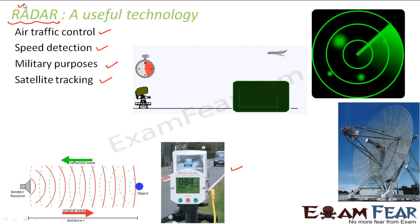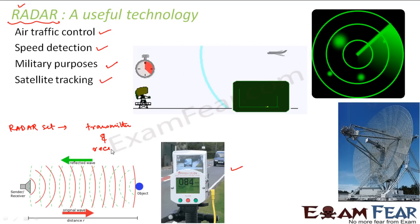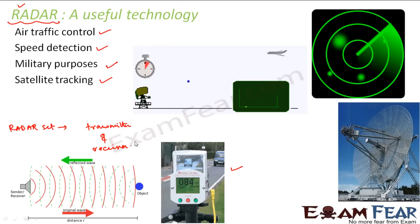Now, how does radar work? A radar set consists of a transmitter and a receiver. The transmitter transmits microwaves. The microwaves travel outward and as soon as they strike some object in their path, they get reflected. This reflection is received by the receiver, generally in the form of an echo.